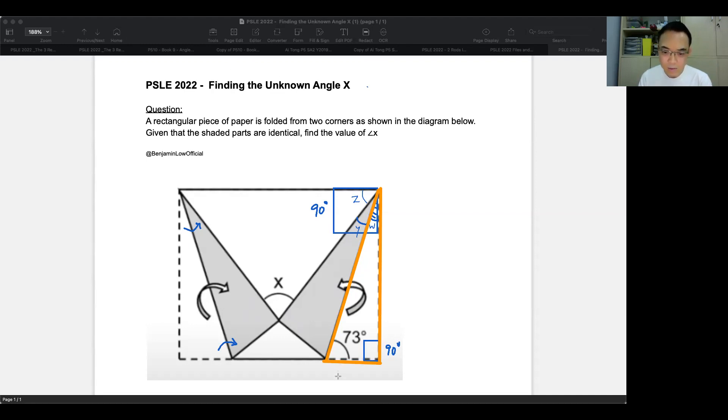So if I were to take 180 and I were to subtract away these two angles, that should give me angle W. And we know that angle Y is the same as W. So I'm basically also finding angle Y.